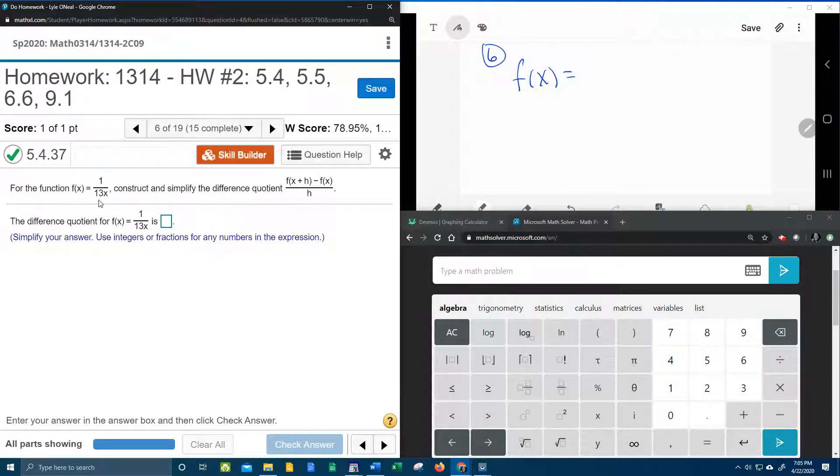They give us the function f of x equals 1 over 13x, and they want us to construct and simplify the difference quotient. So here we go up here on the screen. Our function f of x is 1 over 13x.